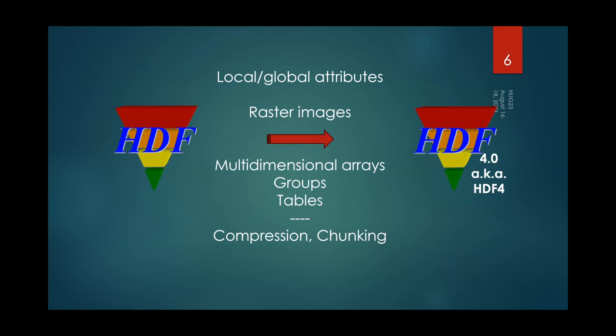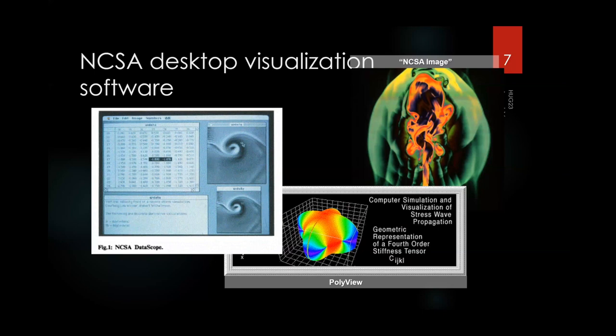Out of that, HDF — the Hierarchical Data Format — was created. It supported raster images, multi-dimensional arrays, groups, and tables. There were local and global attributes that allowed scientists to put their metadata in the file. Under the hood there was some data compression and chunking, and by the mid-90s version 4.0 was available. The people who developed HDF were part of a larger group whose main job was to create desktop visualization software. These tools were open source and free and gained a huge following.